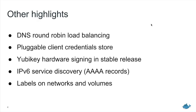Docker's internal service discovery system — which I just demonstrated with that round robin load balancing — is actually a DNS server running inside Docker which is resolving those host names. This now supports AAAA records, which are IPv6 records. So if you want Docker to integrate with your IPv6 infrastructure or ensure your Docker stuff is future-proof, we now support returning IPv6 addresses in our service discovery system.